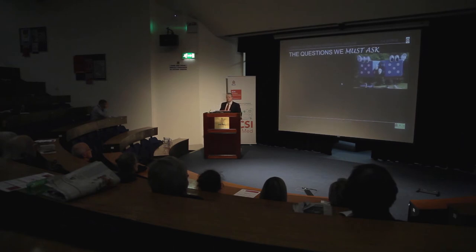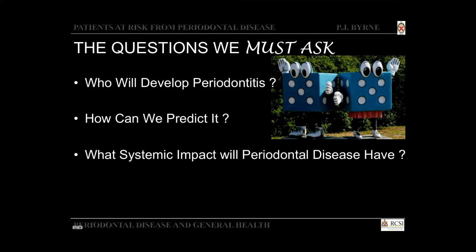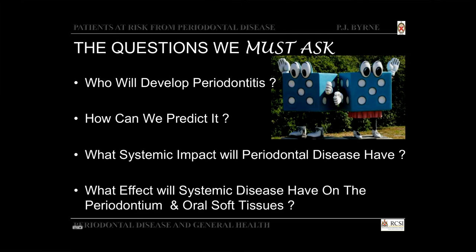There are certain questions we should ask: who will develop periodontitis — could it be me, could it be my sons or daughters? How can we predict it? What systemic impact will periodontal disease have, and what effect will systemic disease have on the periodontium and oral soft tissues? Over the past number of years we've learned a lot about the relationship between risk factors and the development and progression of periodontal diseases.